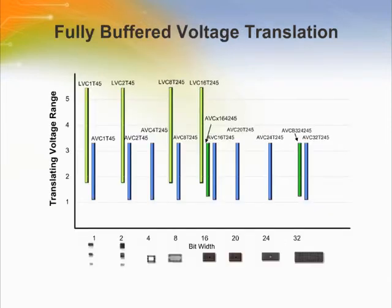This slide shows TI's product roadmap for fully buffered dual supply level translators. They are flexible to translate to or from a variety of voltage nodes. They have active current drive capability and are available in a variety of bit widths.